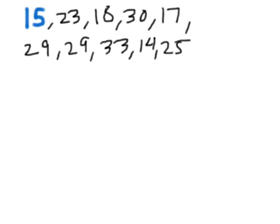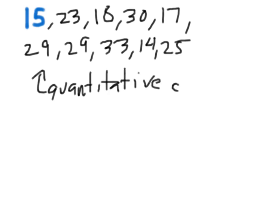We're going to look at a bunch of different ways to do a graph that will display the distribution of this quantitative data — this is all quantitative data. There are a few different kinds of graphs we're going to make, and the first kind is something called a dot plot.